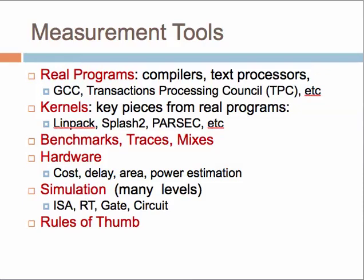You could also get kernels — key pieces from a real program like LINPACK. They have a bunch of real applications and kernels in them. You could also look at traces. One of the ways you can run things faster is to collect a trace of a program. For example, if you run an application at the network interface and you're interested in what packets are transmitted, you could write some way of capturing that information — the timestamp, source, destination, and size of each packet.